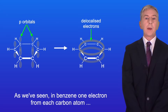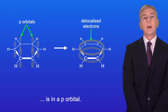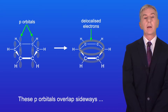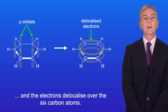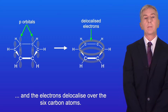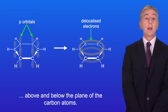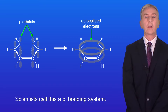In benzene, one electron from each carbon atom is in a p orbital. These p orbitals overlap sideways and the electrons delocalize over the six carbon atoms. This forms a ring of electron density above and below the plane of carbon atoms, and scientists call this a pi bonding system.